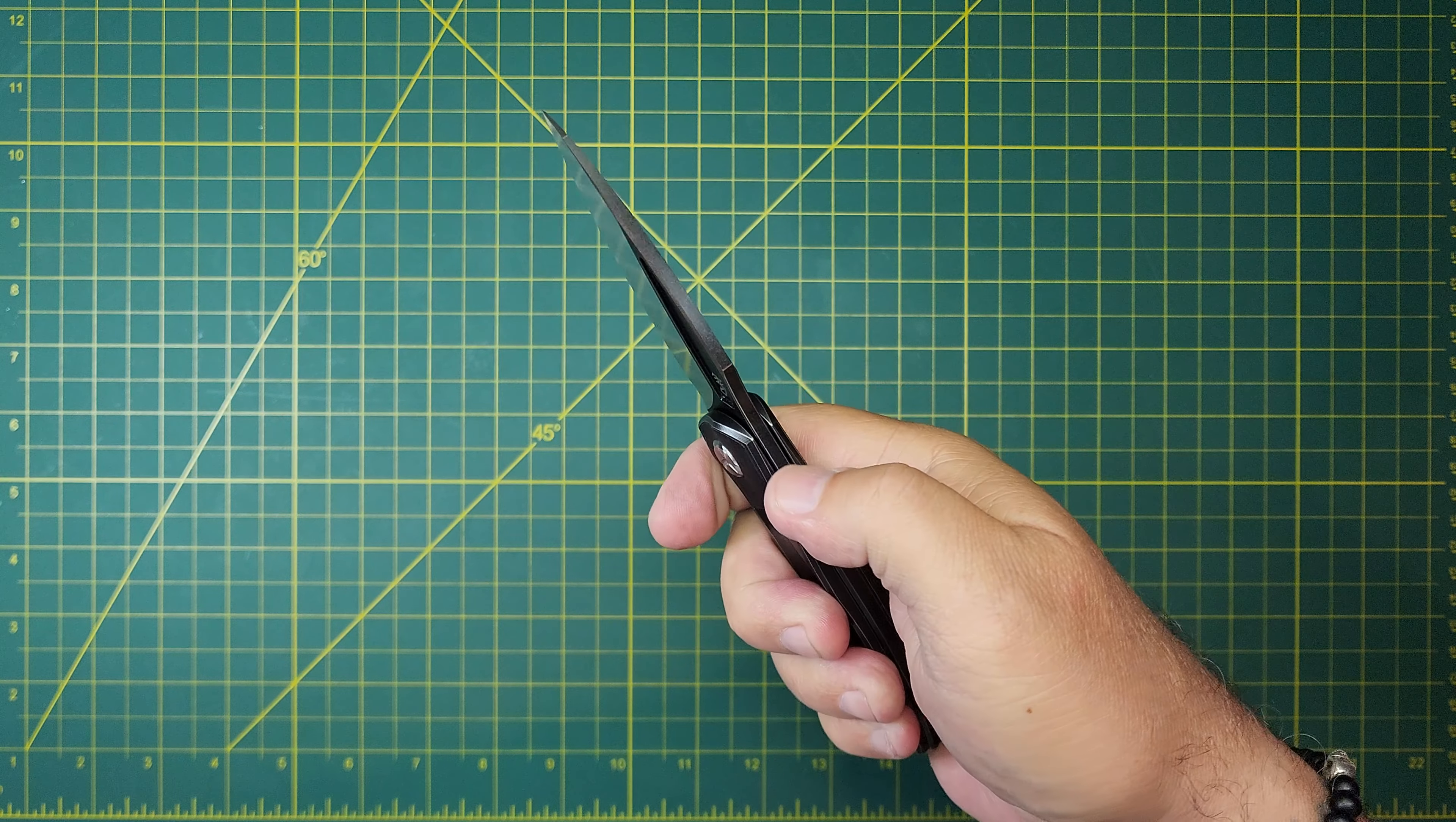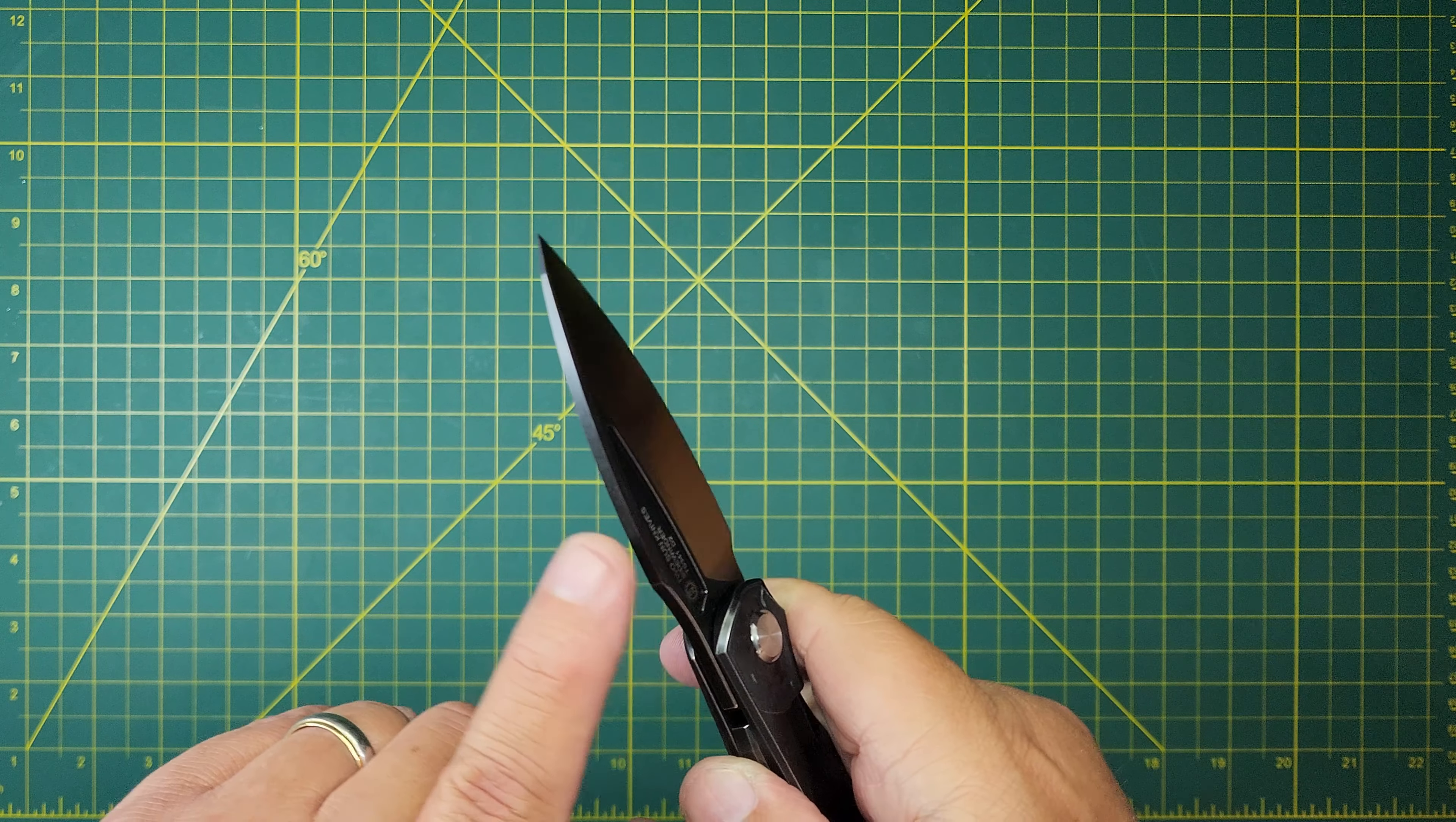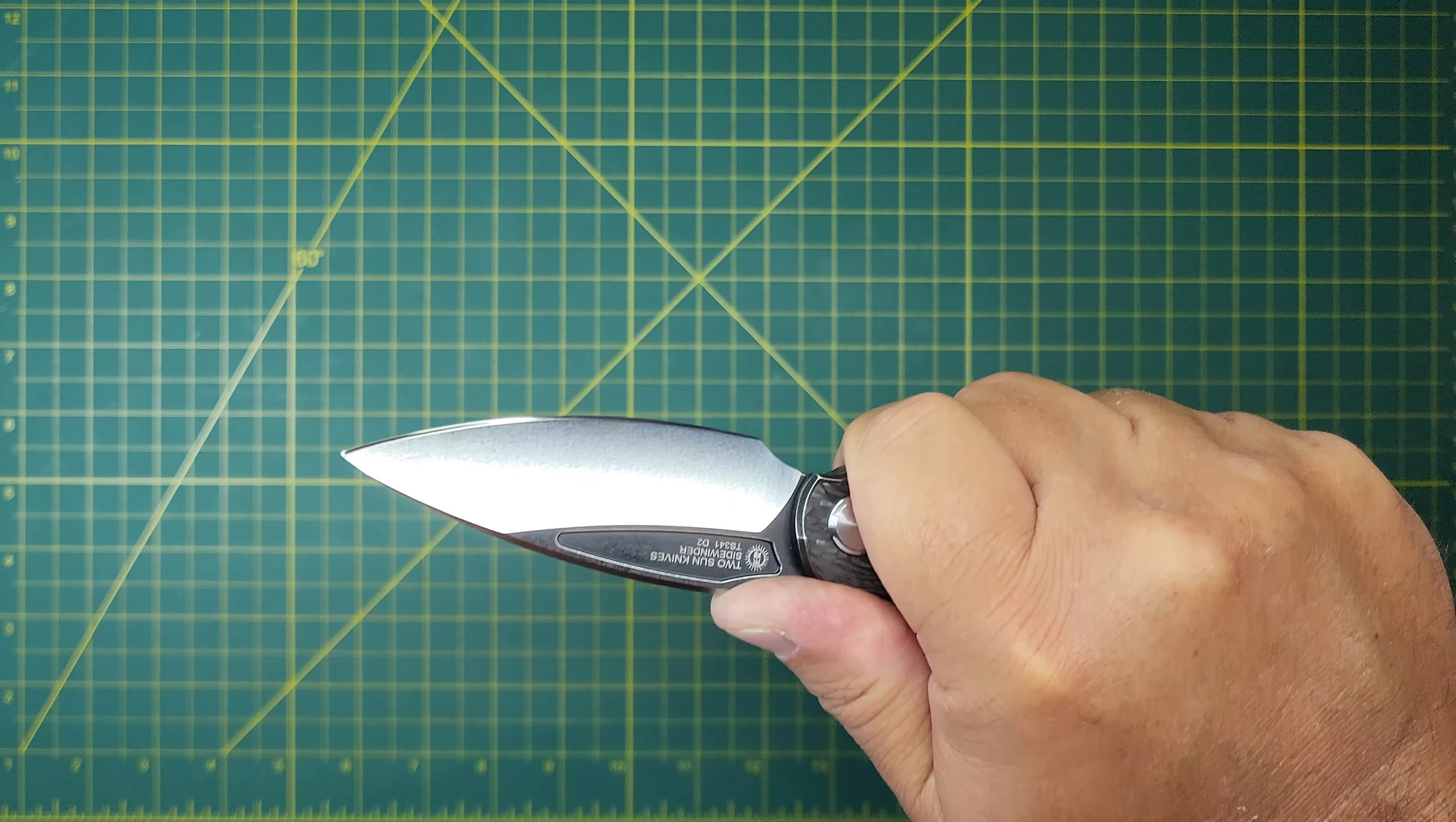So there's no jimping here, but it's got this, I don't know, what would you call this? It's got this indenture here that the thumb fits right in. So a strong thumb forward feels pretty confident.